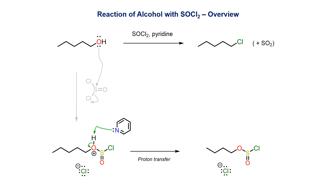The acidic proton on the oxonium ion is then removed by pyridine, which sometimes serves as the solvent in these reactions. This generates the neutral sulfonyl chloride, which has similar properties to a tosylate ester leaving group.